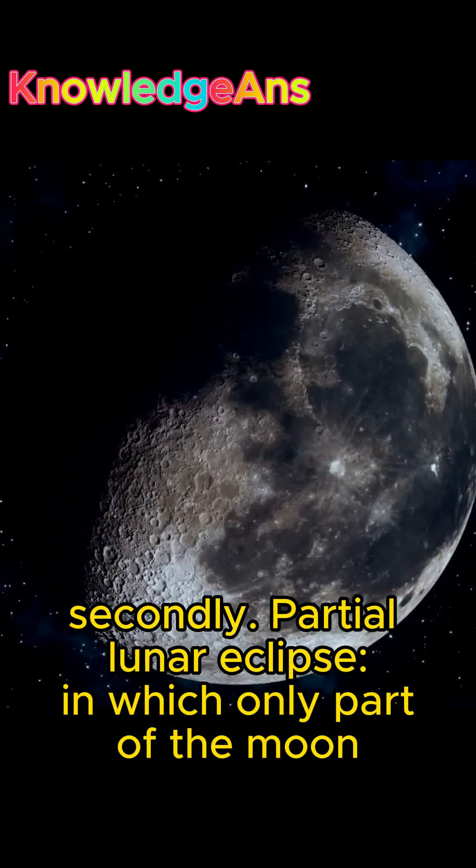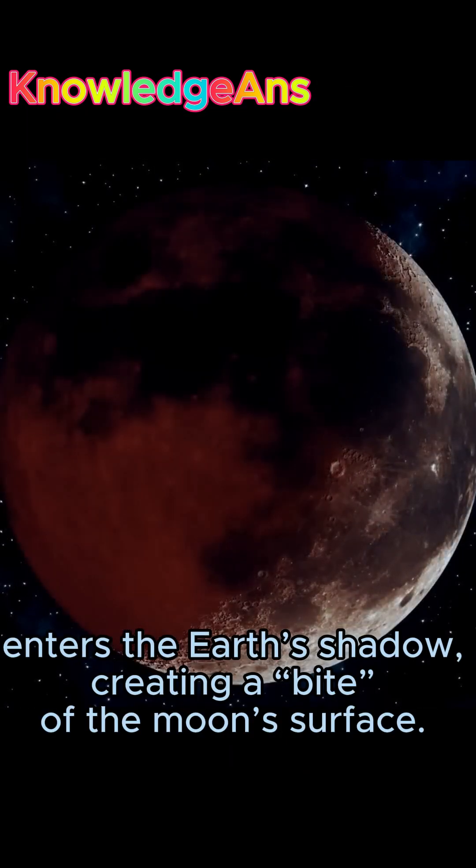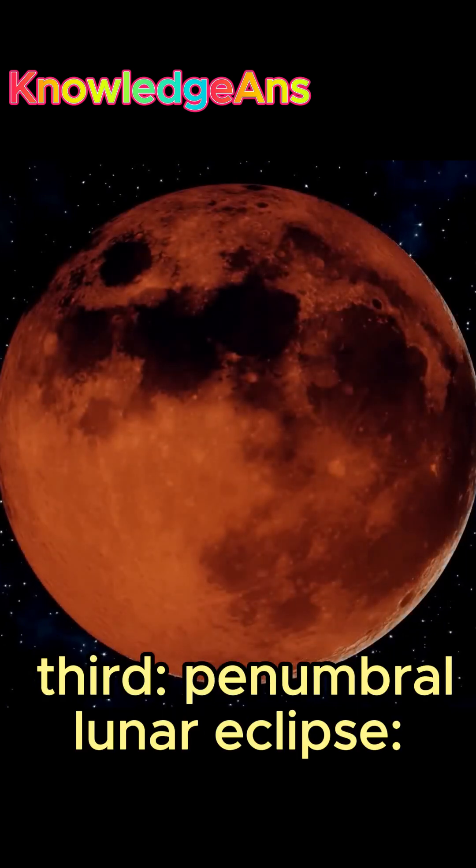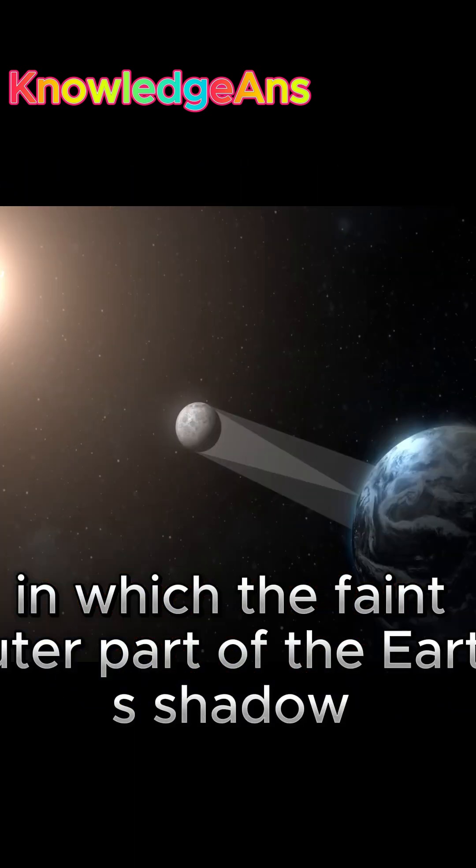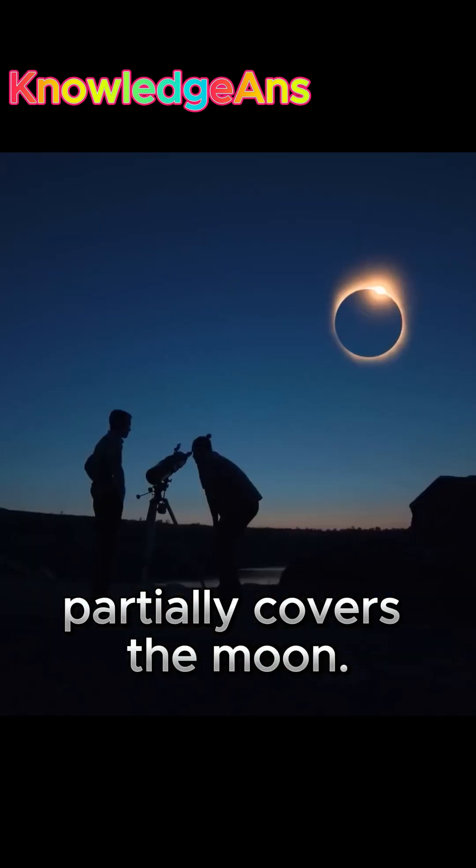Secondly, partial lunar eclipse, in which only part of the Moon enters the Earth's shadow, creating a bite in the Moon's surface. Third, penumbral lunar eclipse, in which the faint outer part of the Earth's shadow partially covers the Moon.